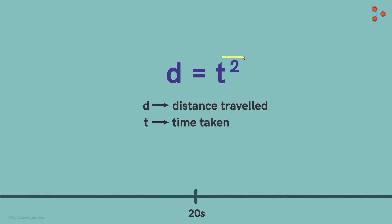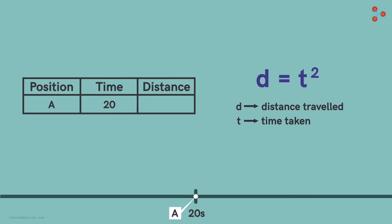From this relation, we get that at 20 seconds, the distance travelled is 400 meters. Now after h seconds, the distance travelled will be this.